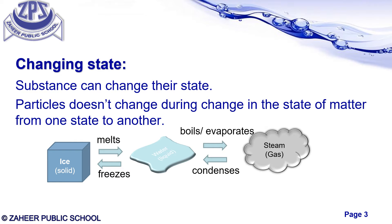The particles do not change. In this picture you can see the changing of states. In the first change, solid ice is the solid form, and when it melts it changes into liquid. Then during boiling, the liquid changes into steam. When the steam gets condensed it changes back into liquid, and the liquid on freezing converts into solid. This is the changing of states.